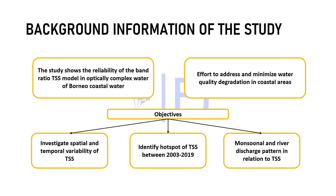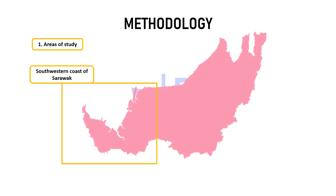Here is the background information on this study, which shows the reliability of the Band Ratio TSS model especially at Borneo coastal waters. It served as an effort to address and minimize multiple degradation in coastal areas. Some of the objectives were investigating spatial and temporal variability of TSS, identifying hotspots of TSS, and studying the monsoon and river discharge pattern in relation to TSS.